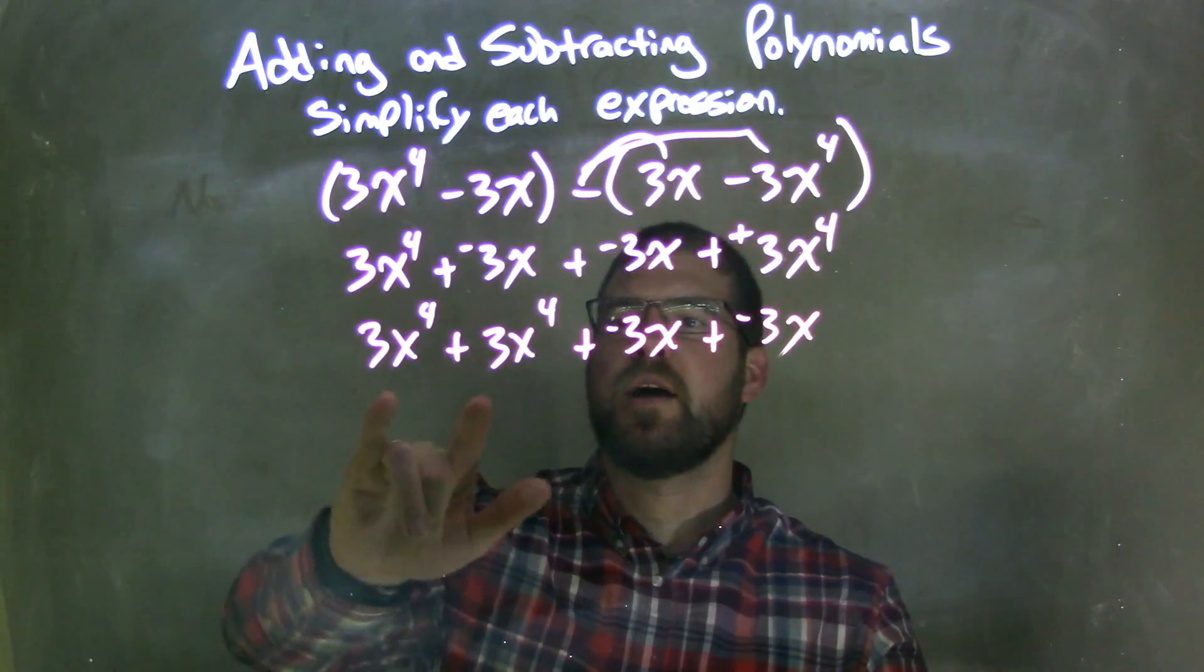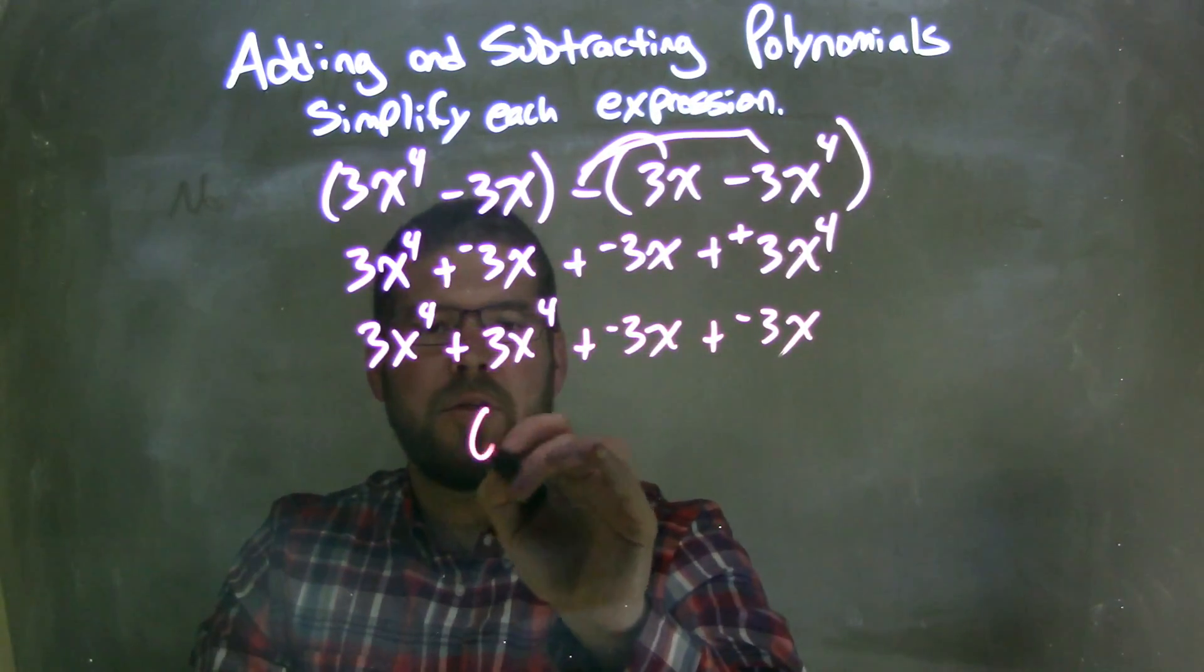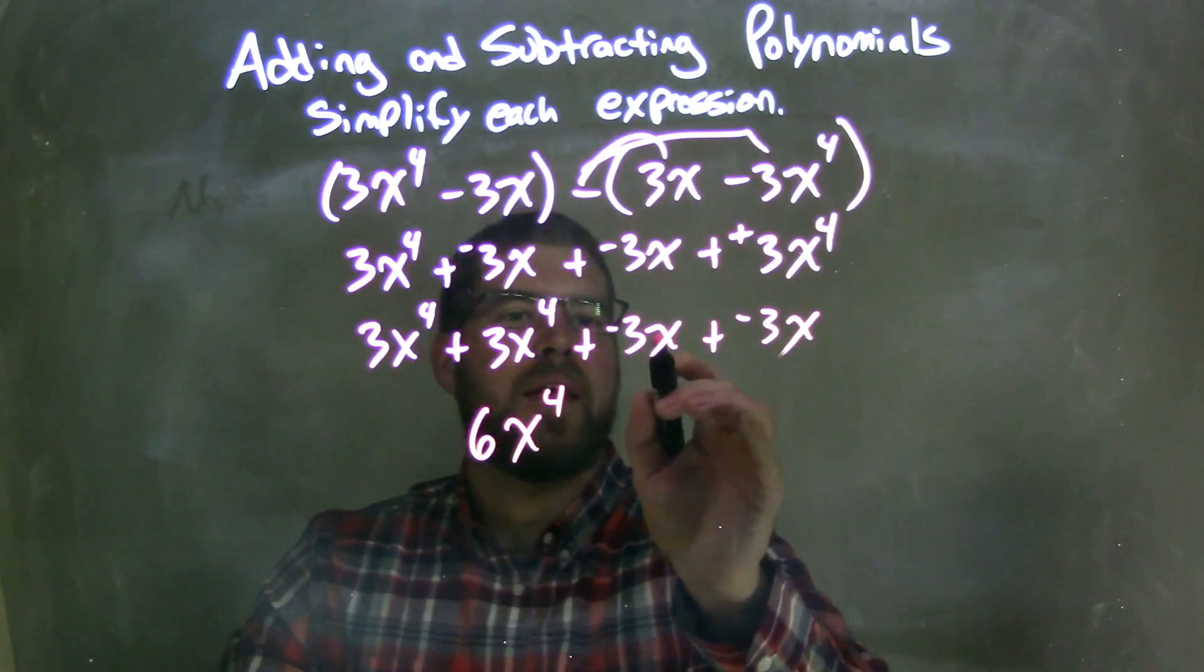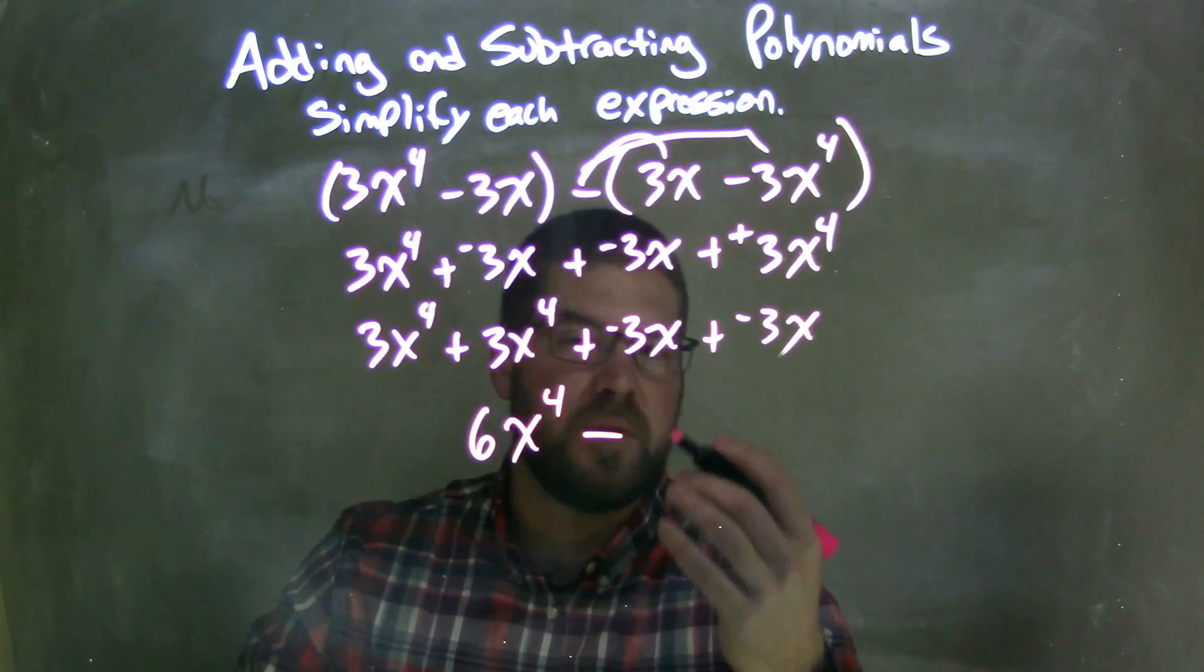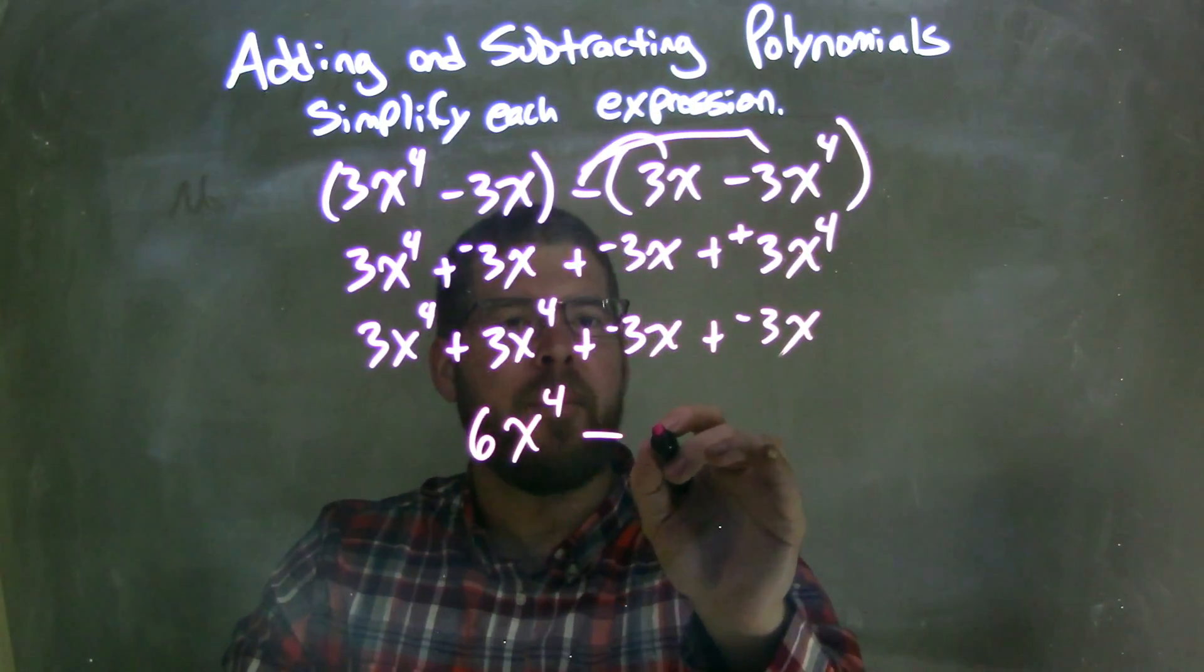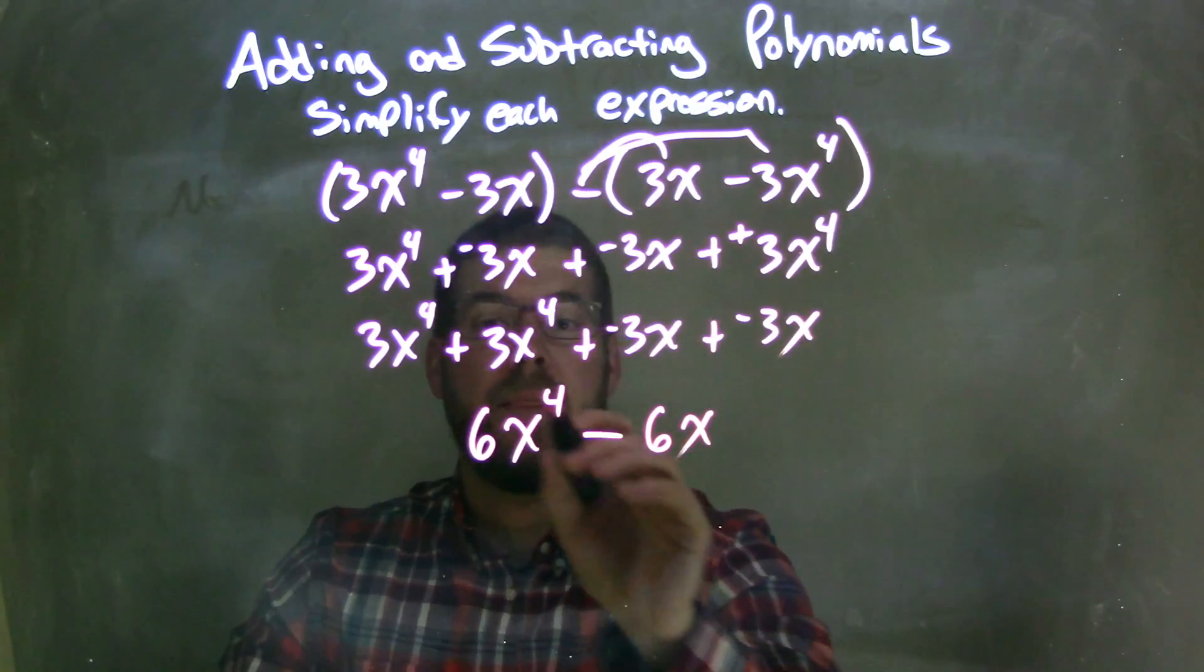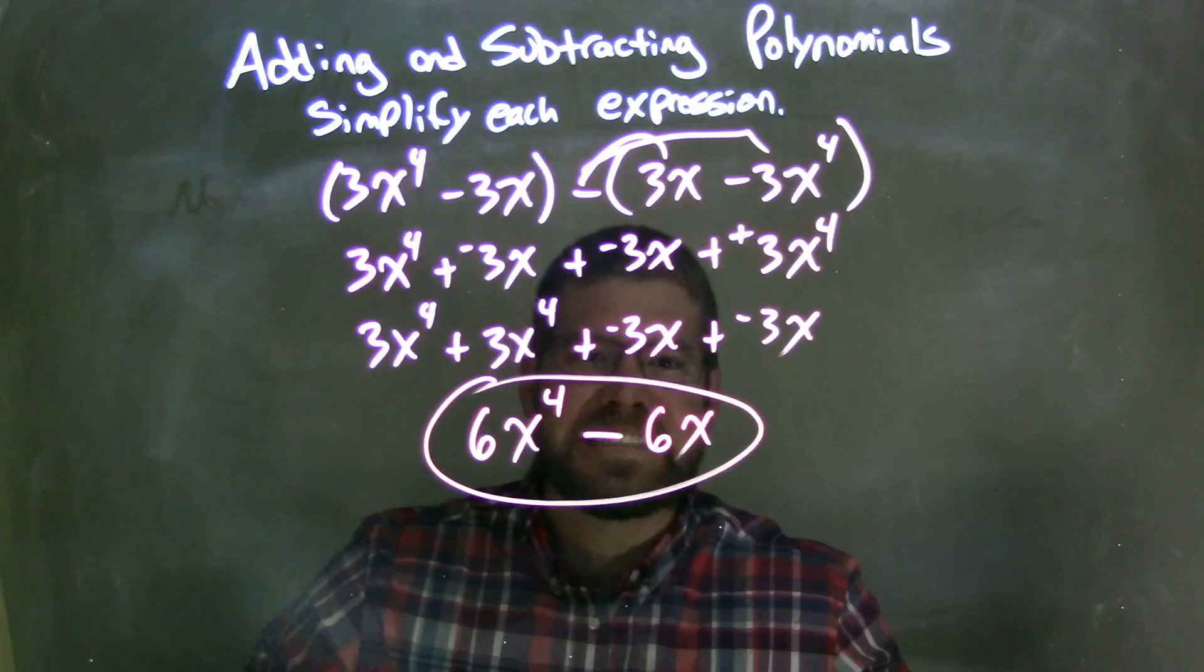So, combine our like terms now. 3x to the 4th plus a 3x to the 4th is a 6x to the 4th. And then, negative 3x plus a negative 3x is a negative 6x. So, we can just put subtraction instead of adding a negative. Minus 6x right there. And there we have it. We have 6x to the 4th minus 6x.